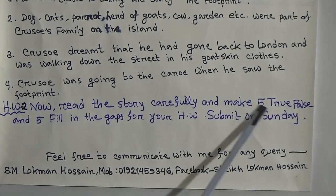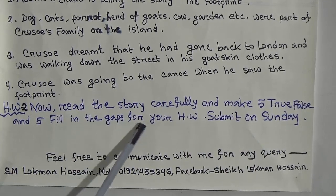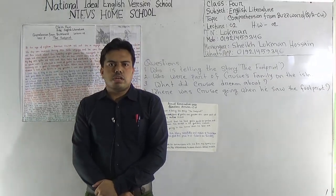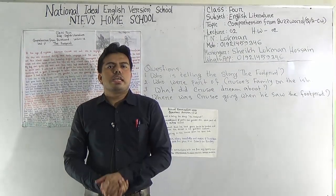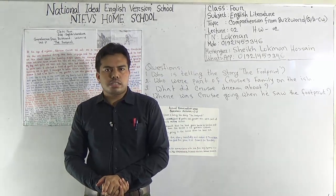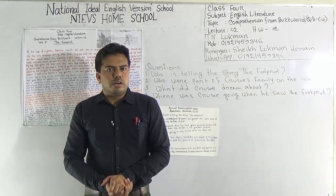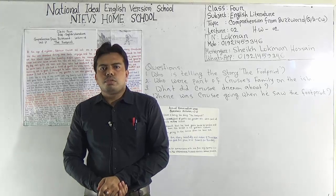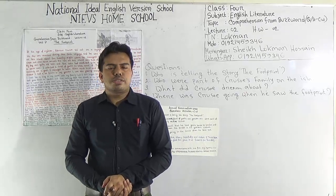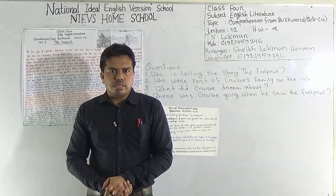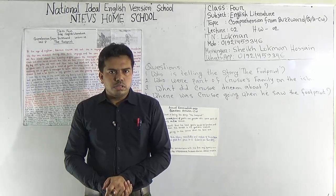Dear students, now read the story carefully and make five true/false and five fill-in-the-blanks for your homework, and submit this homework on Sunday. I hope you have understood our today's passage. The story was about a young curious boy who had many challenges in his life. Because he disobeyed his parents, he got punishment — his ship was wrecked in a heavy storm. So dear students, don't disobey your parents. Stay at home, stay well. See you soon. Allah Hafiz.